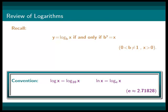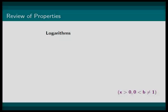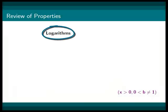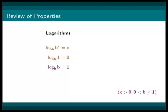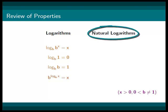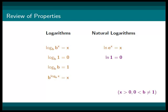Also, keep in mind that natural log of x can also be read as ln x. Some important properties of logarithms are: log base b of b to the x equals x; log base b of 1 equals 0; log base b of b equals 1; and b to the power of log base b of x is equal to x. The corresponding properties for natural logarithms are: natural log of e to the x equals x; natural log of 1 equals 0; natural log of e equals 1; and e to the power of natural log of x equals x.